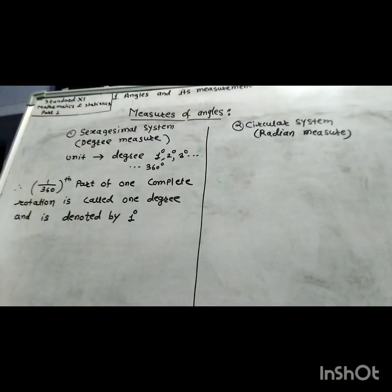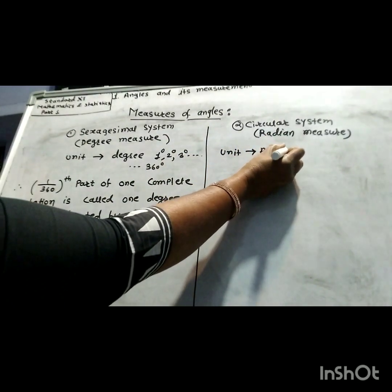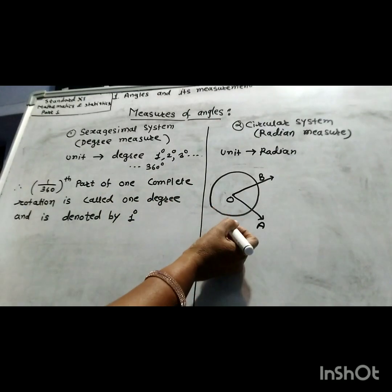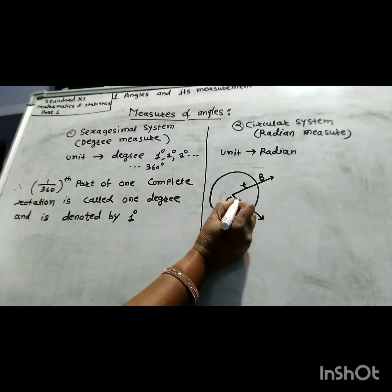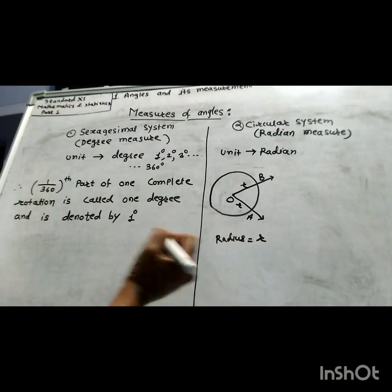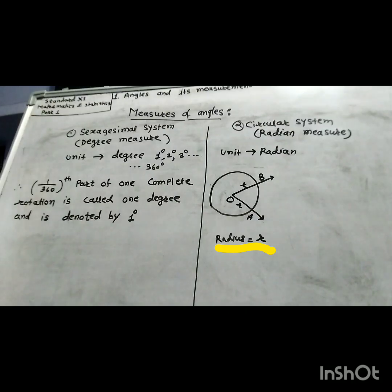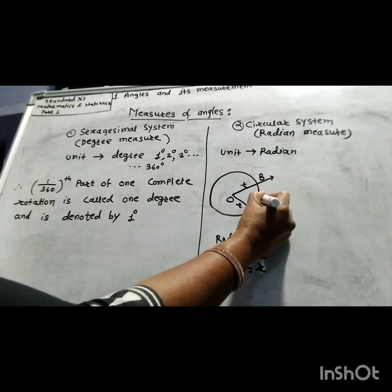In the circular system, that is called radian measure, the unit of measurement of an angle is a radian. Now look at this figure where R is the radius of a circle with center O. OB is a radius, and similarly OA is also a radius. Points A and B are on the circle, and the distance AB is also equal to R, that is, equal to the length of the radius.